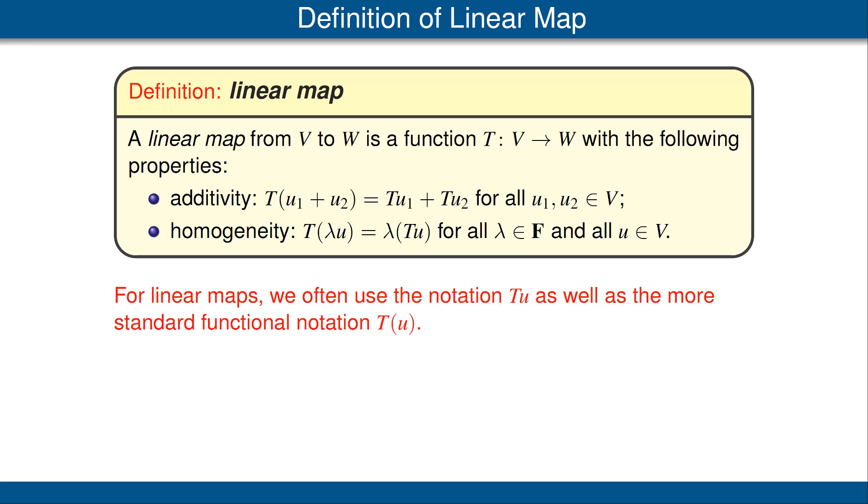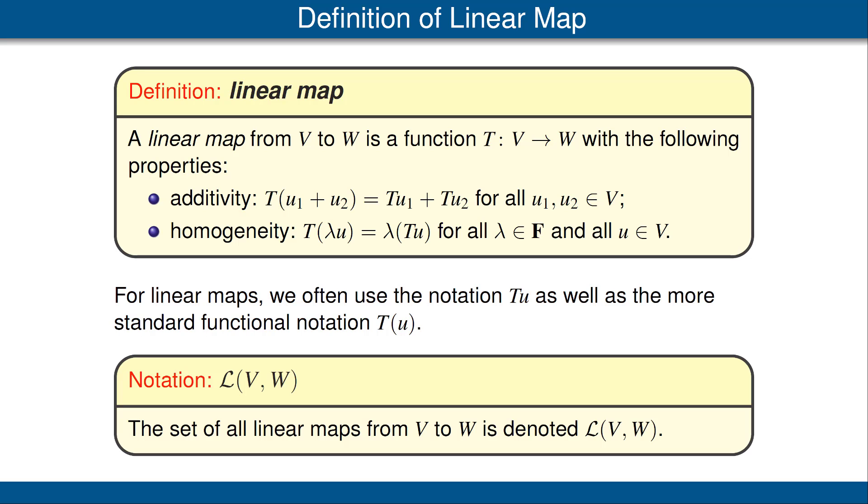Note that when dealing with linear maps, we often use the notation Tu without the parentheses, as well as the more standard functional notation T(u) with the parentheses. These two notations are interchangeable. Sometimes leaving out the parentheses makes things clearer. Sometimes the parentheses are needed for grouping. The set of all linear maps from V to W is denoted by L(V,W).